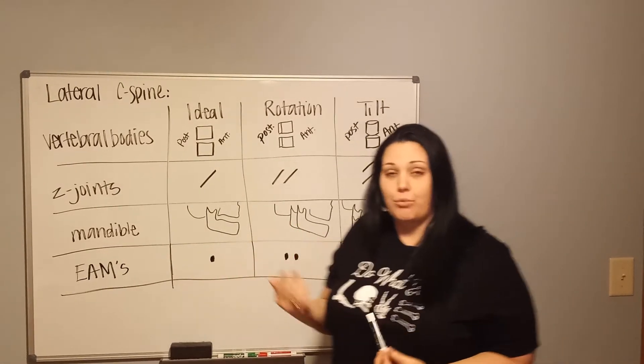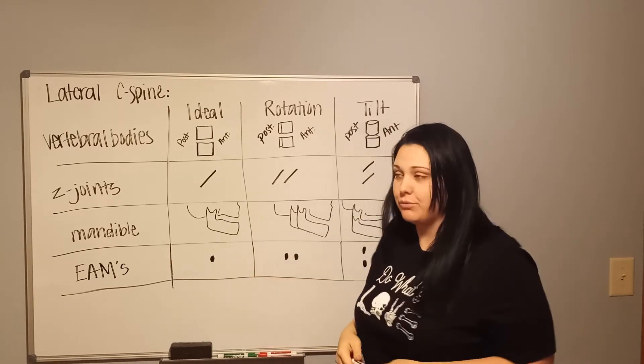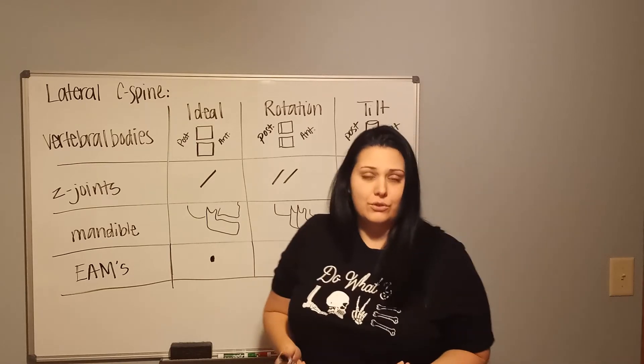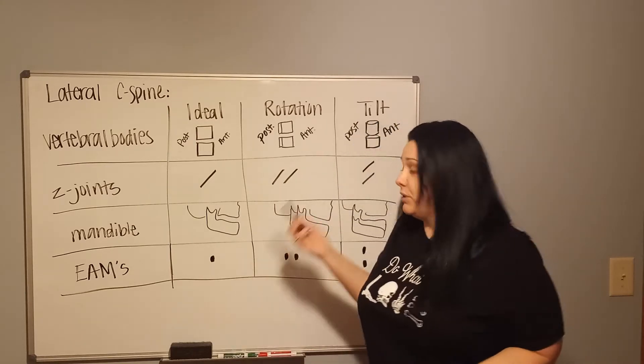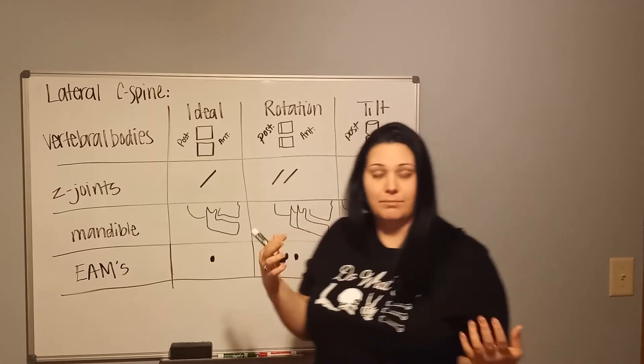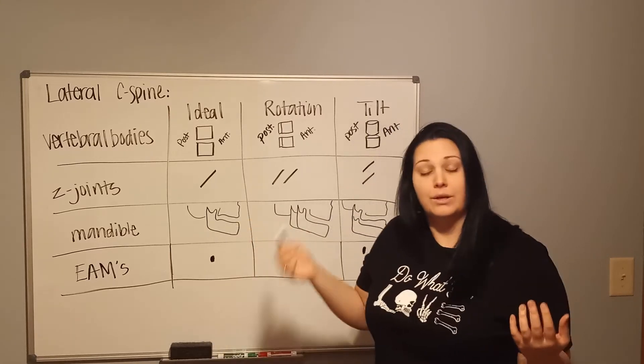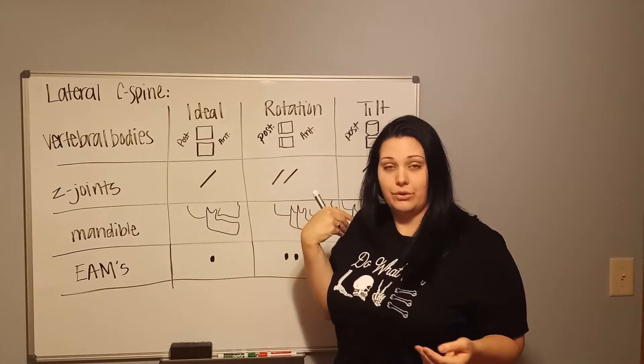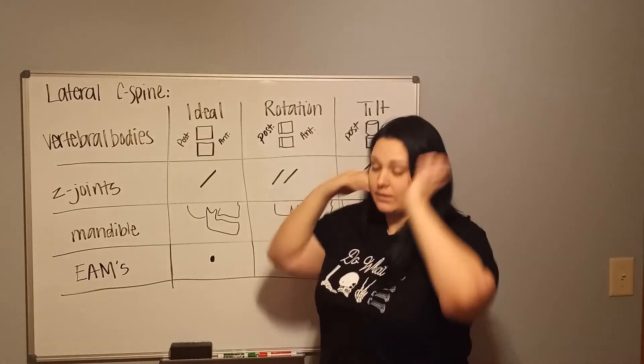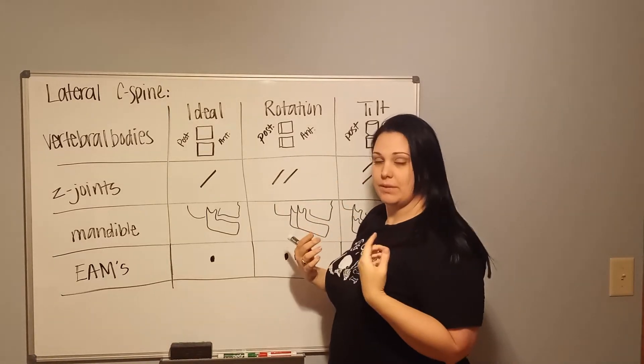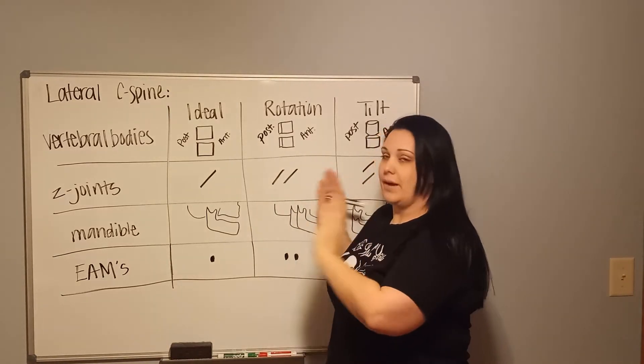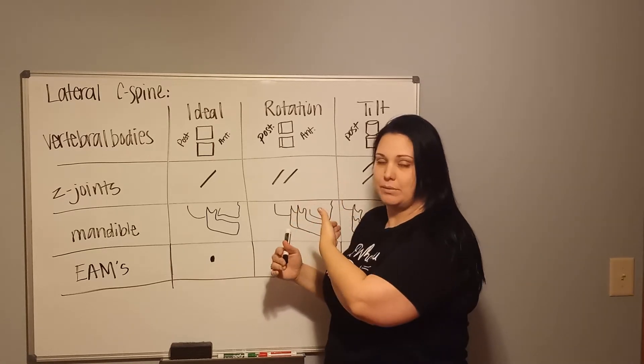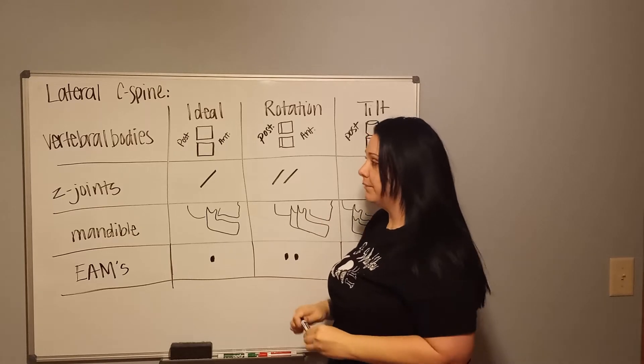The next piece of this is, again, what are the different things that we can look at to know that our lateral is appropriately positioned? Facts about the lateral C-spine: they're done at 72 inches. Why? We do it at 72 inches to reduce the magnification that naturally occurs between the image receptor that's in our upright bucky and our shoulder and our neck.